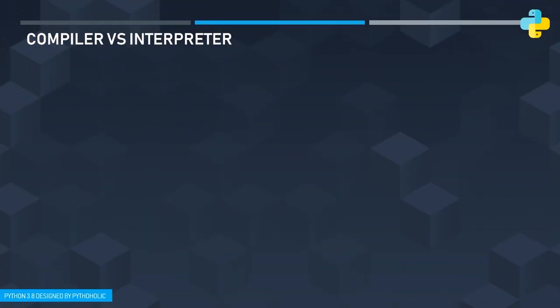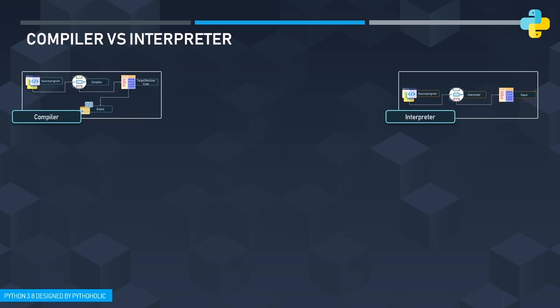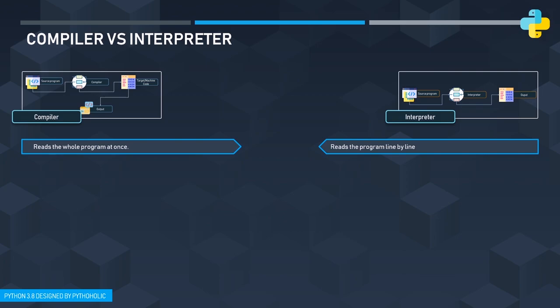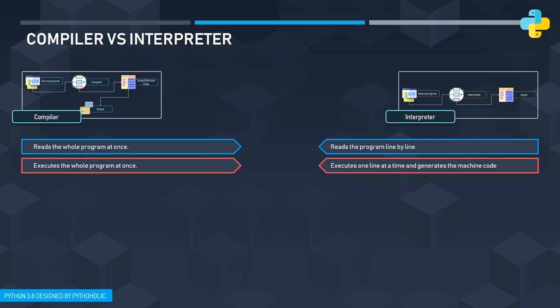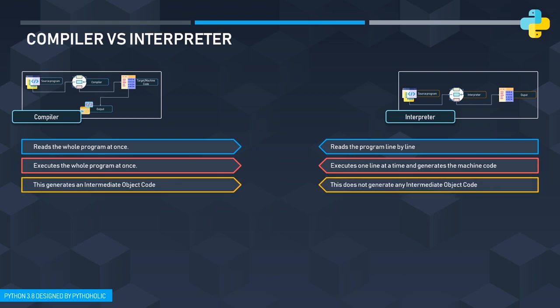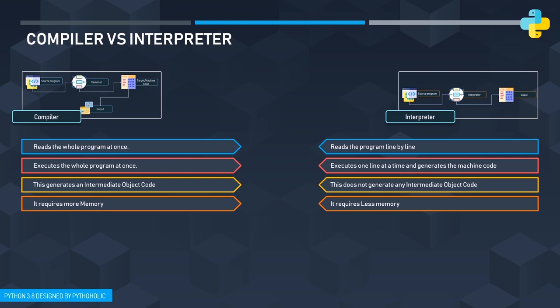Comparing compilers and interpreters: the compiler reads the whole program at once while the interpreter reads line by line. Compilers execute the whole program at once and generate an intermediate object code, whereas the interpreter executes one line at a time and generates byte code. Compilers require more memory since they process a lot of information at once; interpreters require less memory because they execute one line at a time.